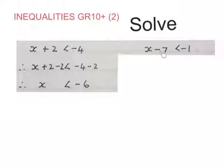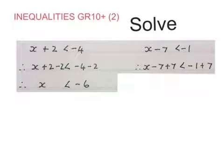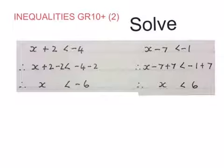Next one. x minus 7 is smaller than minus 1. You're plus 7 on both sides to get rid of this minus 7. Your final answer is x is smaller than 6. And your inequalities stayed the same.